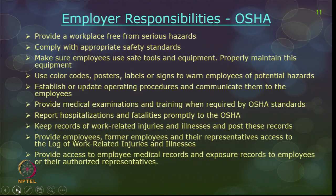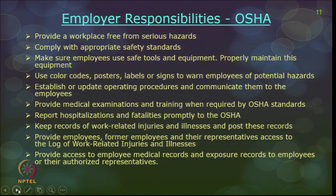Employer responsibilities — applying to both owner and contractor — as per OSHA guidelines include: provide a workplace free from serious hazards; comply with appropriate safety standards; ensure employees use safety tools and equipment and know how to maintain them; use colour codes, posters, labels, or signs to warn of potential hazards; provide medical examinations and training when required by OSHA standards; keep records of injuries and illnesses and post and provide access to these records so employees know what hazards exist and what accidents have occurred in the past.